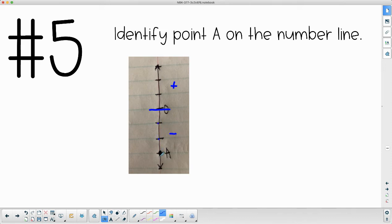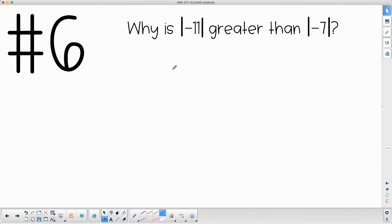Number six asks us why is the absolute value of negative 11 greater than the absolute value of negative seven? Let's think about what absolute value means. If you remember, absolute value means the distance away from zero. So the absolute value of negative 11 means that it is 11 units away from zero, and this means that it is seven units away from zero. We know 11 is greater than seven. When you're talking about absolute value, it's telling us how many units from zero it is.